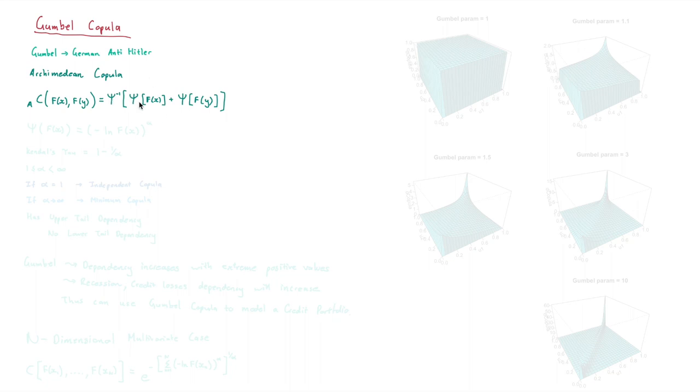Essentially, we have these generator functions where we add the marginal distributions together, and then we take the inverse of the sum of them. Essentially, the big idea is taking state space 0 to 1 to 0 to infinity, adding there, and then bringing it back to 0 to 1 so that we have a probability.